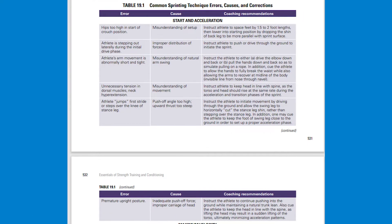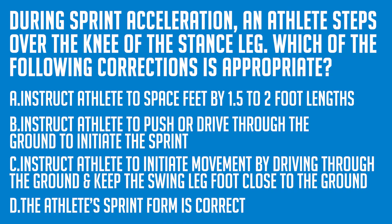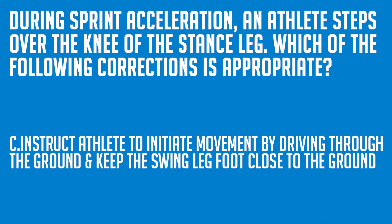This recall question asks you to memorize the sprint form table and corrections. Now instead of memorizing each and every table in the CSCS textbook, being able to visualize sprinting form will aid you more in this question than memorizing would. If we take a look at the common sprinting technique errors, we know that the accelerative sprinting requires a nearly horizontal shin angle on the swing leg, not stepping over the planted leg, which will lead us to answer C, which happens to be the correct answer.